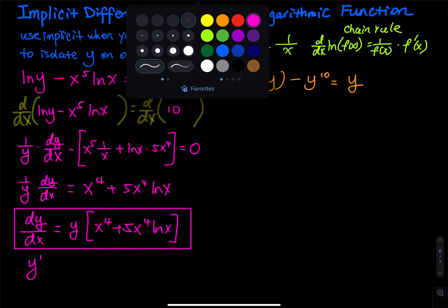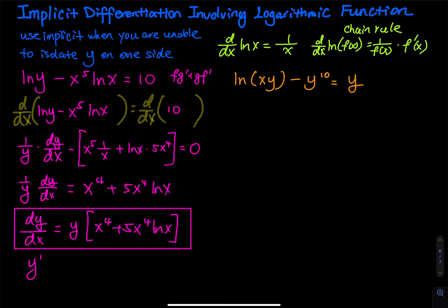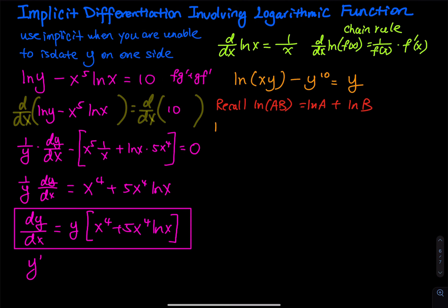Moving on to the next problem. You might see x times y and think product rule — yes, you can use that, but let's simplify. Recall the logarithm property: ln(a × b) = ln(a) + ln(b). So I can rewrite the function as ln(x) + ln(y) minus y to the 10 equals y. Now I use implicit differentiation and take d/dx of both sides.